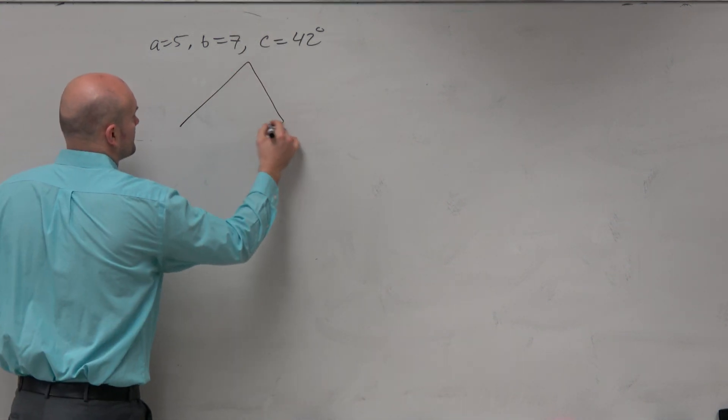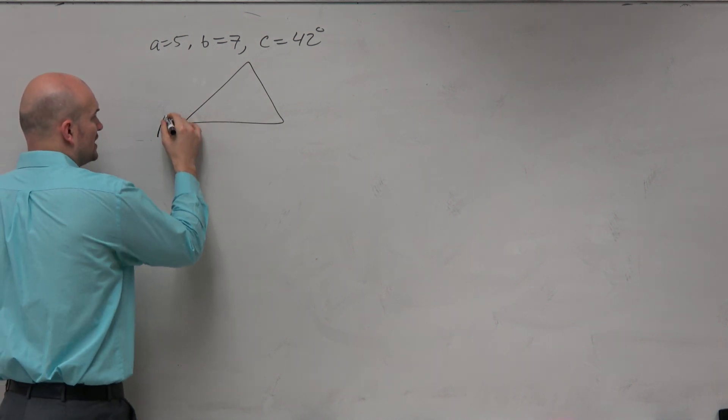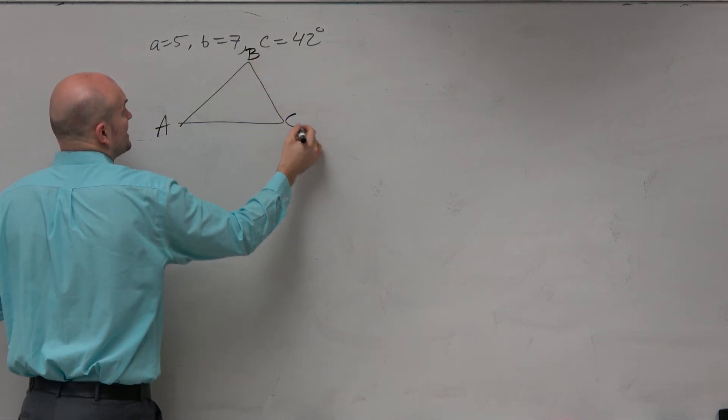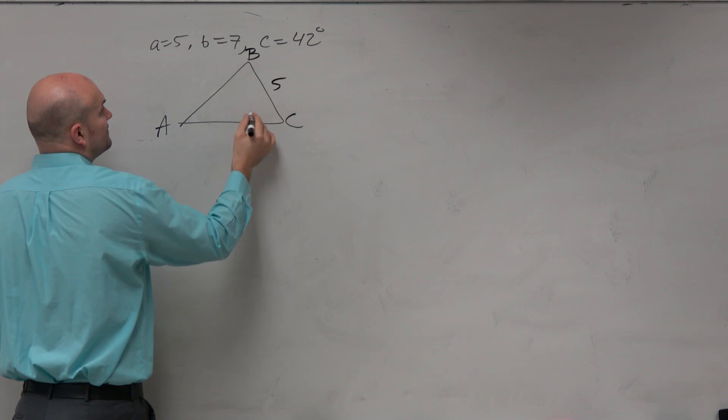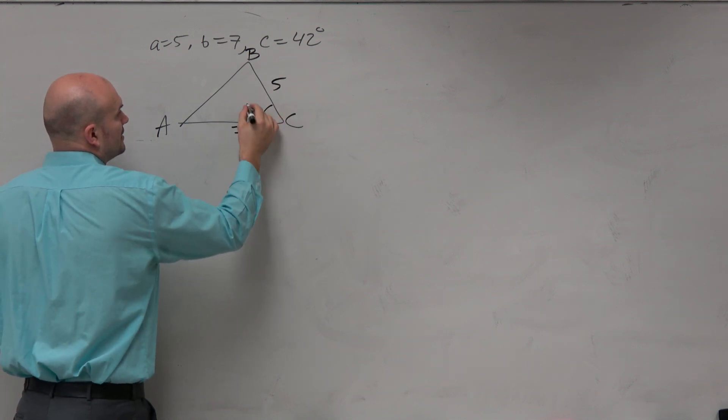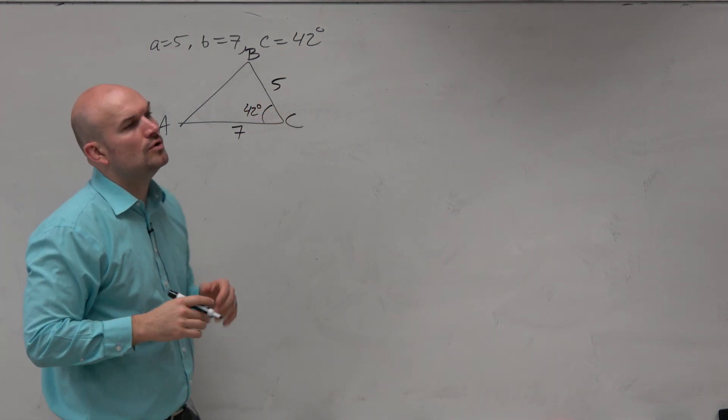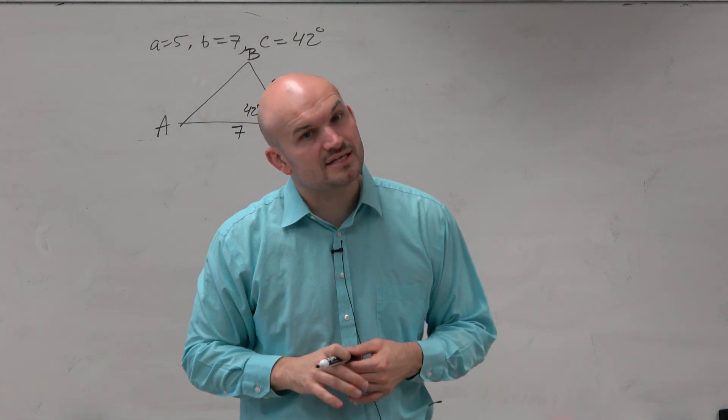Well, why don't we just draw the triangle? So if I draw a triangle, using my standard triangle that I draw, A, B, C, I get this is 5, this is 7, and this is 42 degrees. Oh, this isn't side-side-angle. This is side-angle-side.